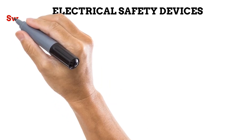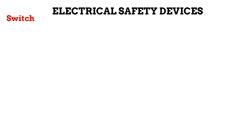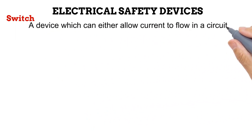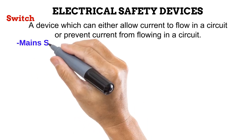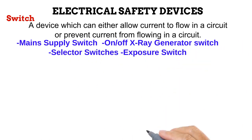The next electrical safety device is the switch — a device that can either allow current to flow in a circuit or prevent it from flowing. Think of it as a bodyguard at the entrance of a party: sometimes he lets people in, but once told nobody comes in, he stops being friendly. Common switches in radiography include the main supply switch, the on/off X-ray generator switch, the selector switches on the control console, and the exposure switch.